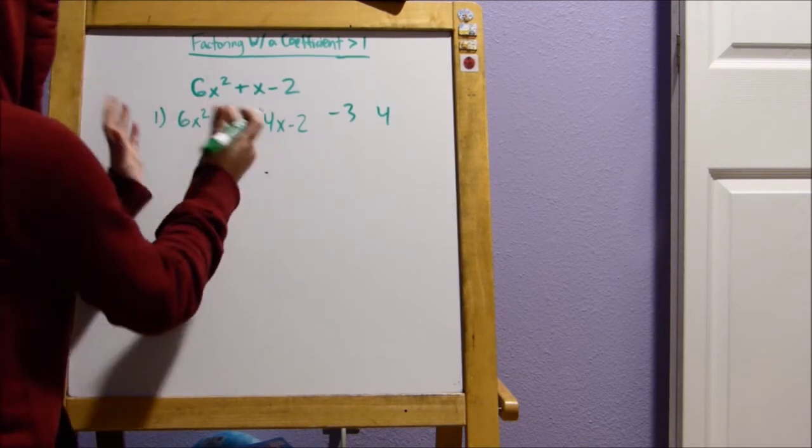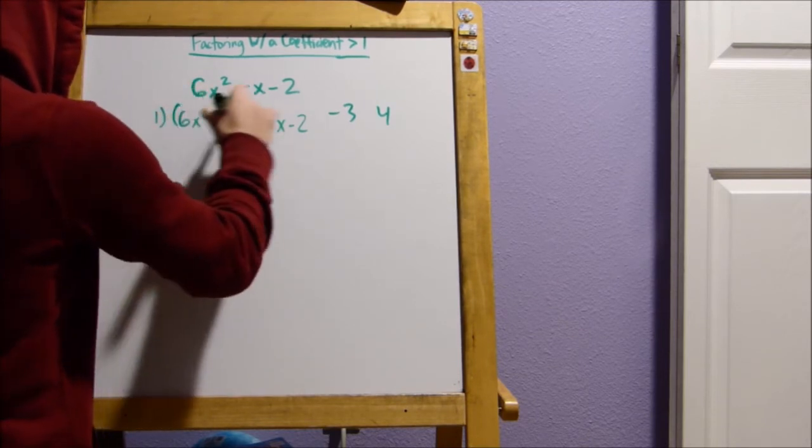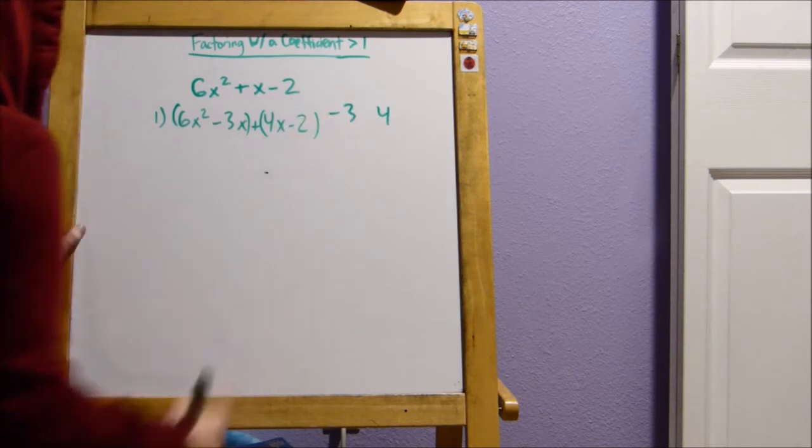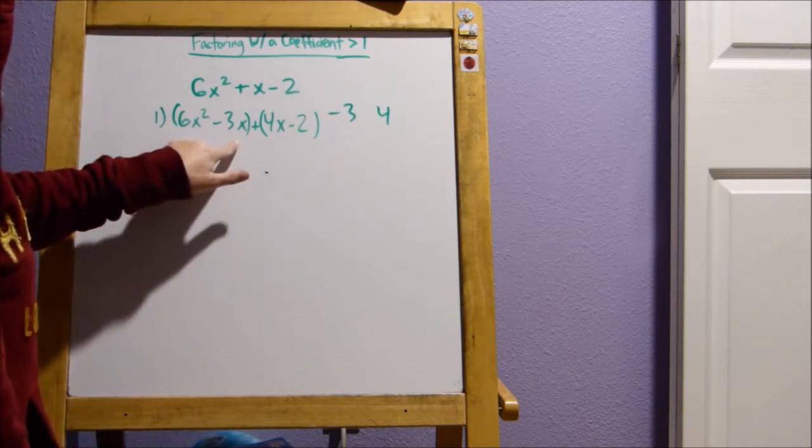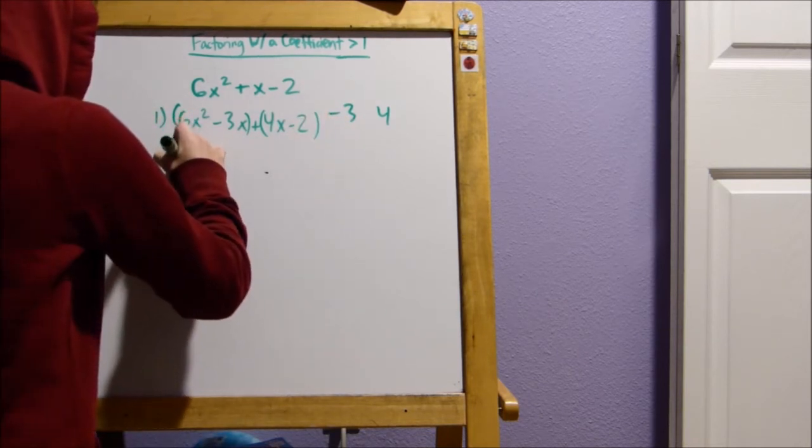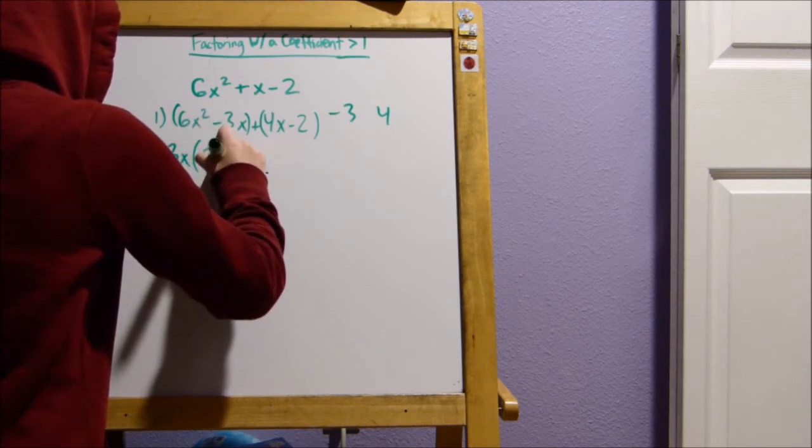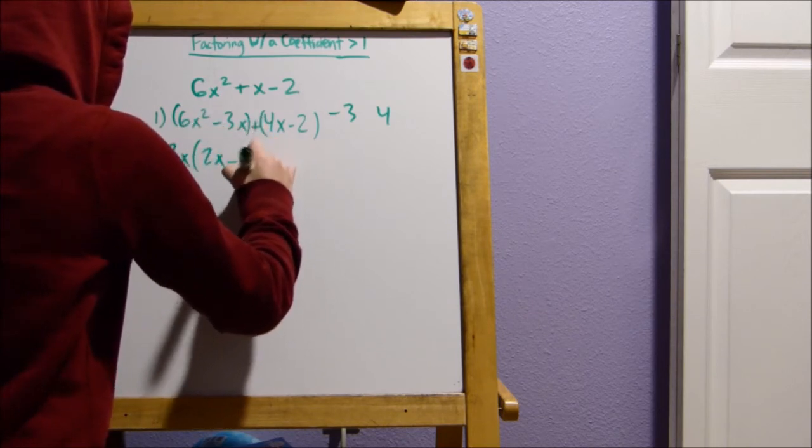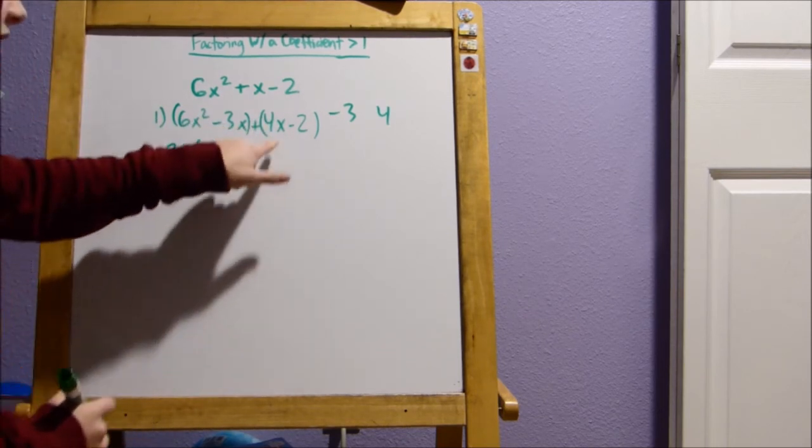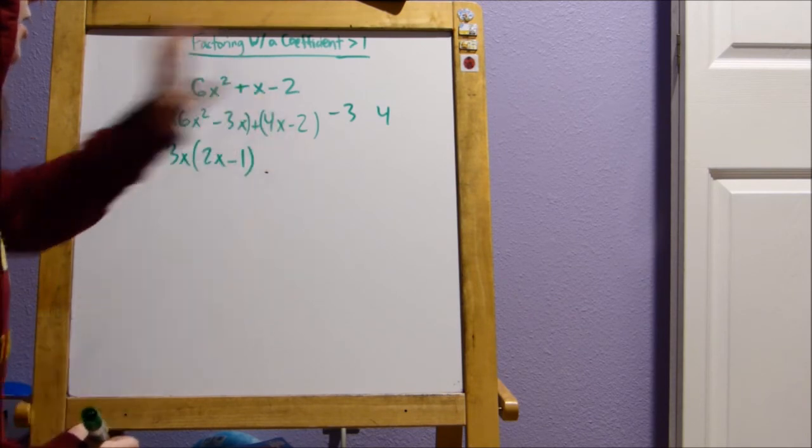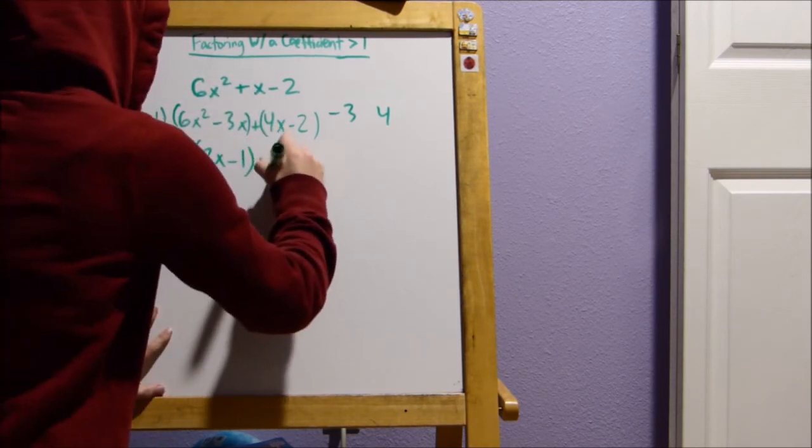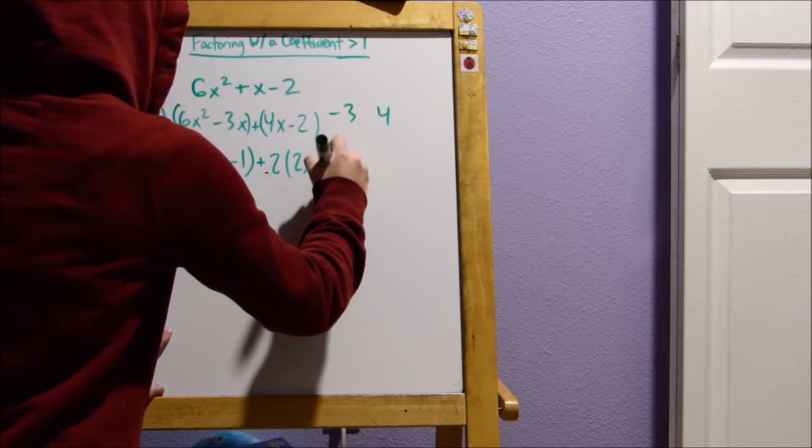So let's just split these into two parts. So this is the first part and this is the second part. So you'll notice here, you can factor out a 3x. So 3x times 2x minus 1. That's the first part. Now the second part, you can see, you can factor out a 2. So plus 2 times 2x minus 1.